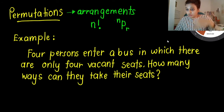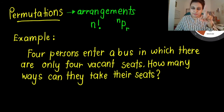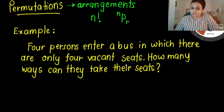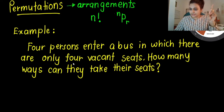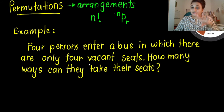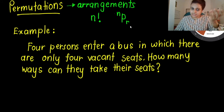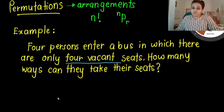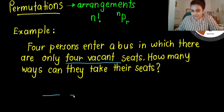Now let's look at how to apply the formula. If you understand the concept of multiplication, you will find permutation easy also. First example: four persons enter a bus in which there are only four vacant seats. How many ways can they take their seats? Let's say the seats are seat one, two, three, four. Four persons are coming in.